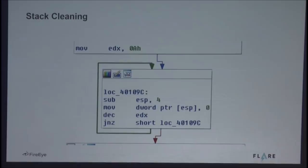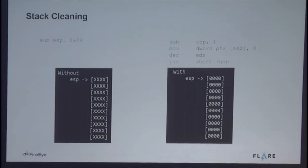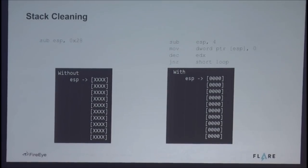It's going to clear out whatever was there before with a null value, repeating this 10 times. Typically, when functions are executed at the beginning, they allocate stack space for local variables. This typically looks like a subtraction from the ESP register, in this case by hex value 28. The stack pointer moves up, and what it currently points to is uninitialized or unknown data. Stack cleaning, on the right-hand side of the screen, allocates the same amount of space, one slot at a time, initializing a zero in each space as it goes. So this is what's called stack cleaning.